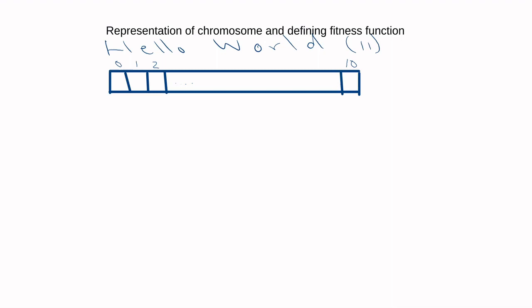You have to define what each location in the array can contain. That would be lowercase letters a to z, uppercase letters A to Z, a space character, punctuation like commas and full stops, and digits zero to nine. This allows us to evolve any piece of text with capital letters, lowercase letters, numbers, and so forth.